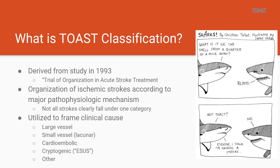In order to understand classification of stroke, and specifically ischemic stroke, you have to have a basic understanding of a study from 1993 called the TOAST study, or Trial of Organization and Acute Stroke Treatment. Basically, it was a study that separated stroke into five categories based on pathophysiology: large vessel, small vessel, cardioembolic, cryptogenic, and other.